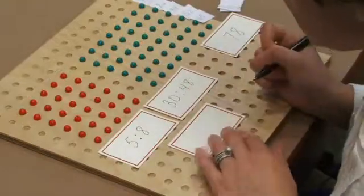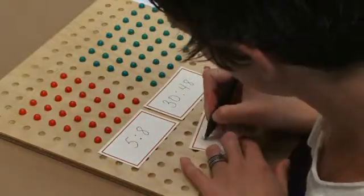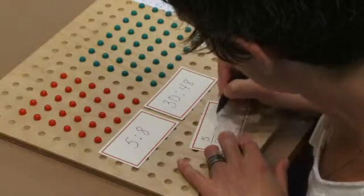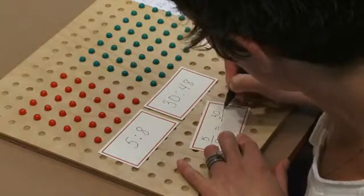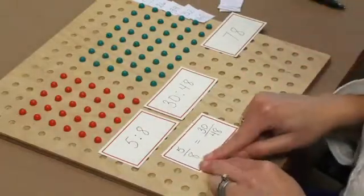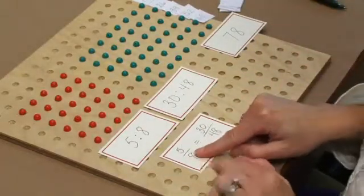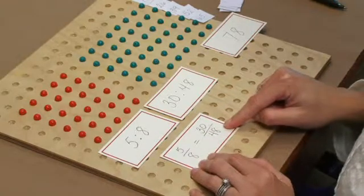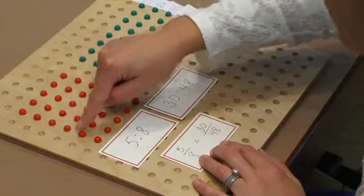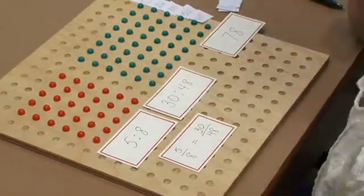The students can put our ratios into fractions and tell me what number we multiplied 5 to 8 by to get 30 to 48. They would tell me 6, which also matches up with the number of rows that we needed to get to the sum of 78.